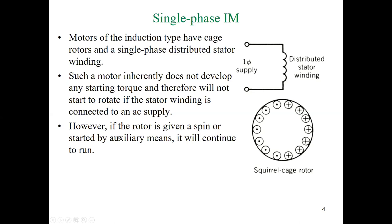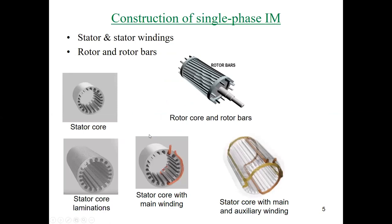If the rotor is given a spin or started by auxiliary means, it will continue to run. The stator core is the same as the three-phase one, however it is wound using only single-phase supply. This core is composed of laminations, connected together — made by laminations to reduce eddy current loss and core loss of the machine. We have one stator term of the winding called the main winding, and another kind called auxiliary winding.